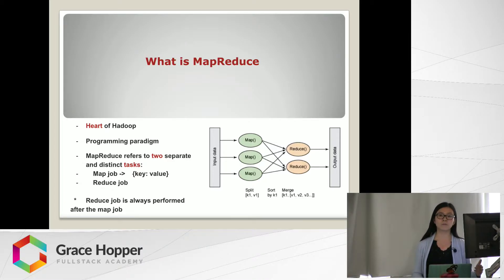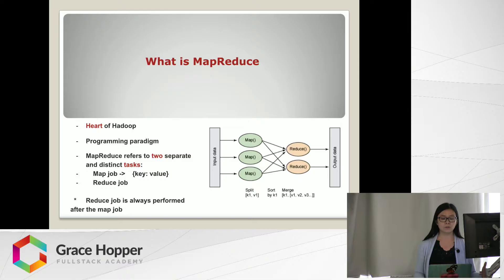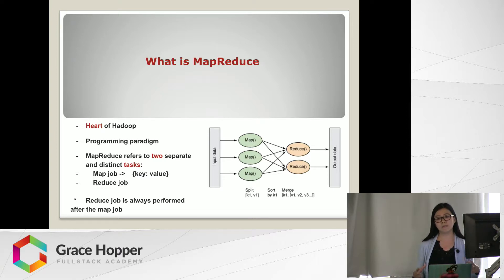MapReduce is the heart of Hadoop. It is the programming paradigm that allows for processing large data sets in a distributed fashion over several machines — it can be hundreds or thousands of Hadoop clusters. Imagine we have a huge file and processing it in a traditional way takes a lot of time. With MapReduce, we divide those huge files into small chunks and process the data in parallel. The core idea is that we map all the data into key-value pairs, and then the reducer takes the output from the map and combines all data values with the same key and processes them as needed. The reduce job is always performed after the map job.